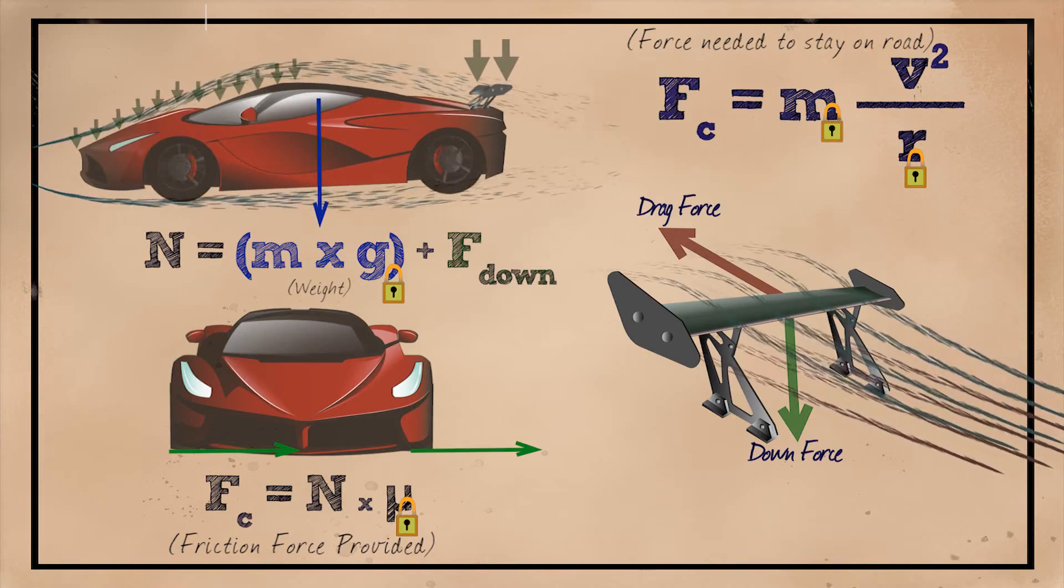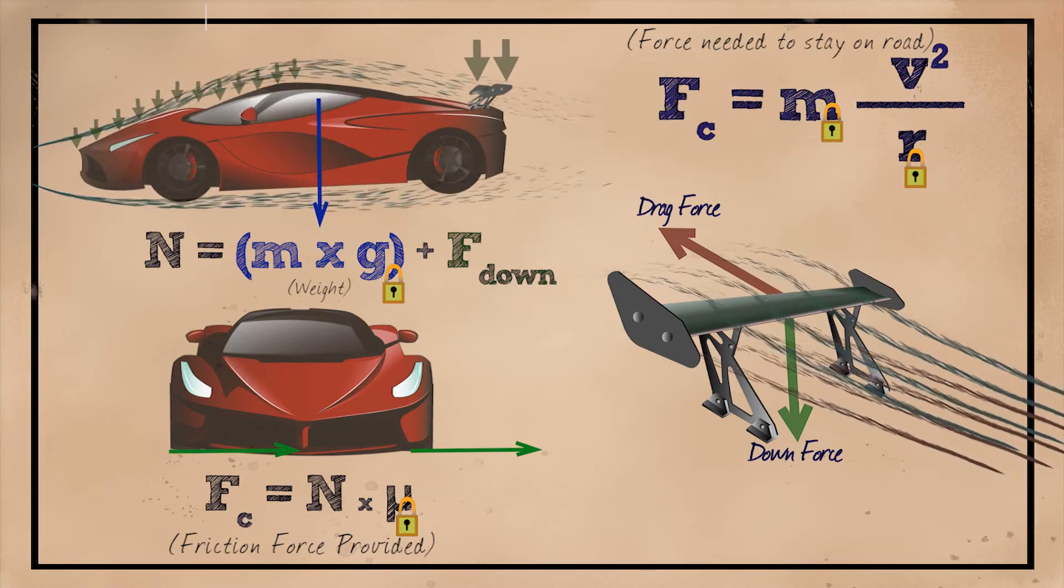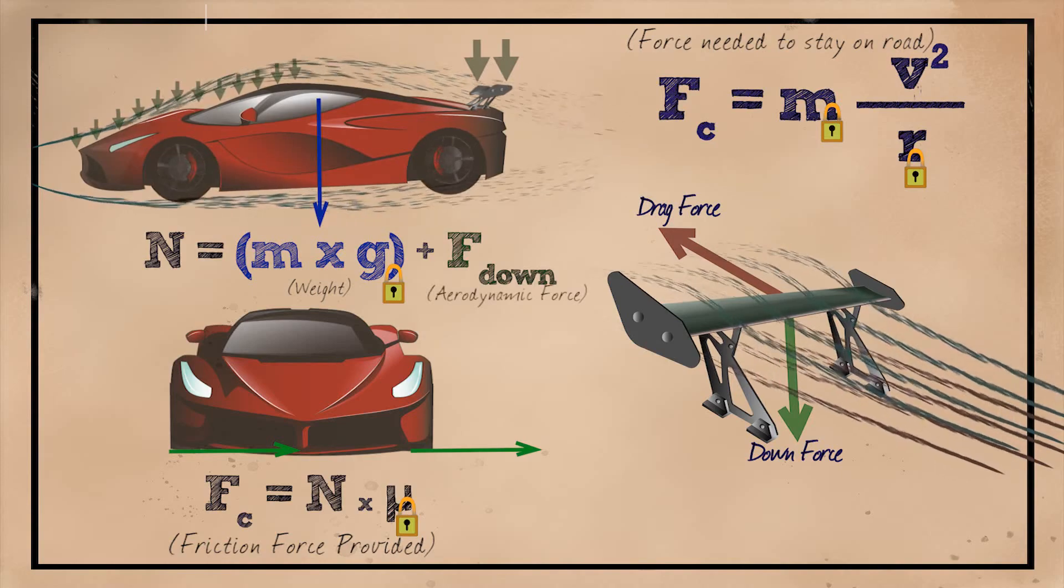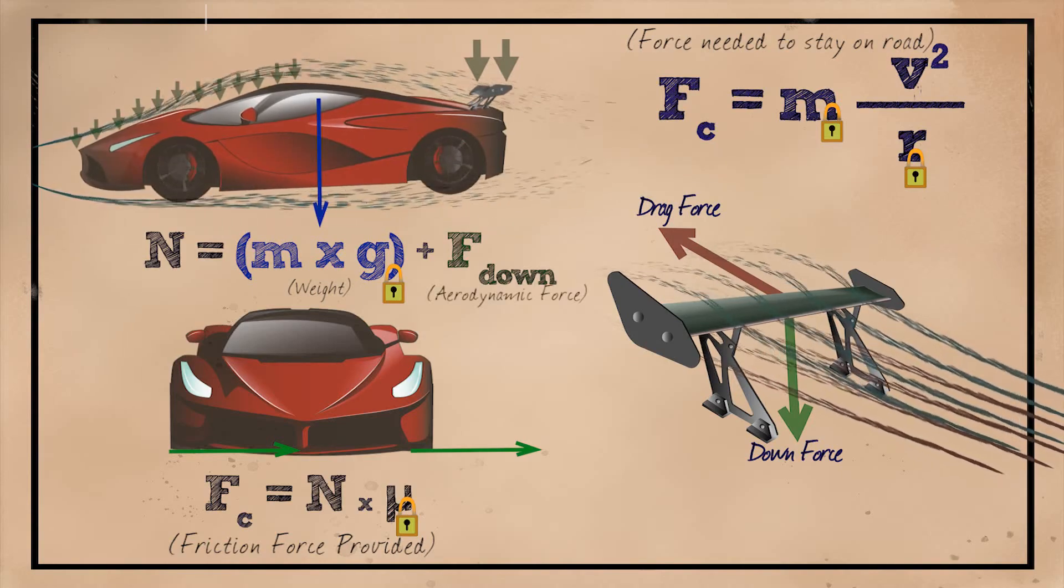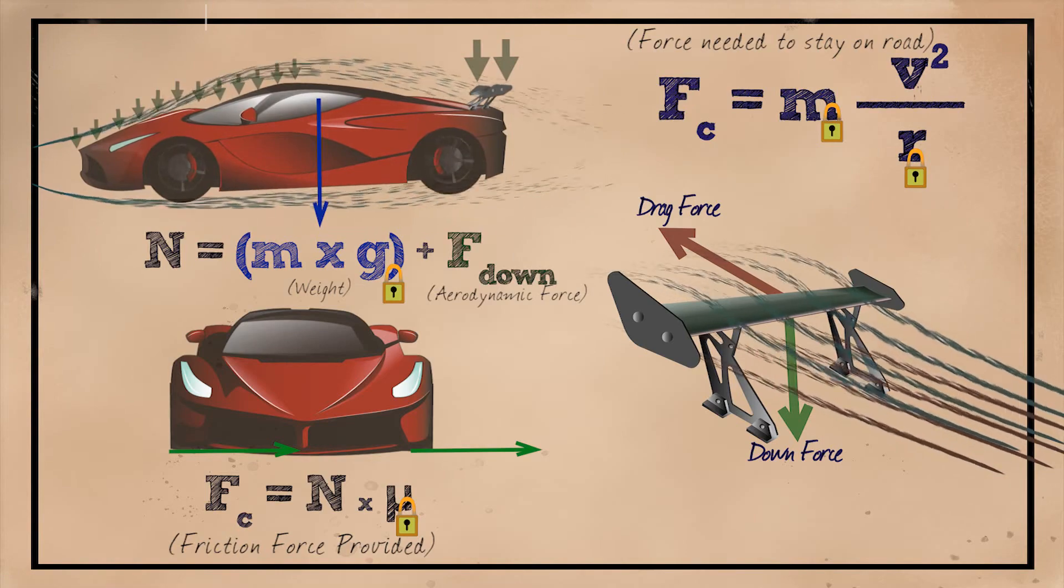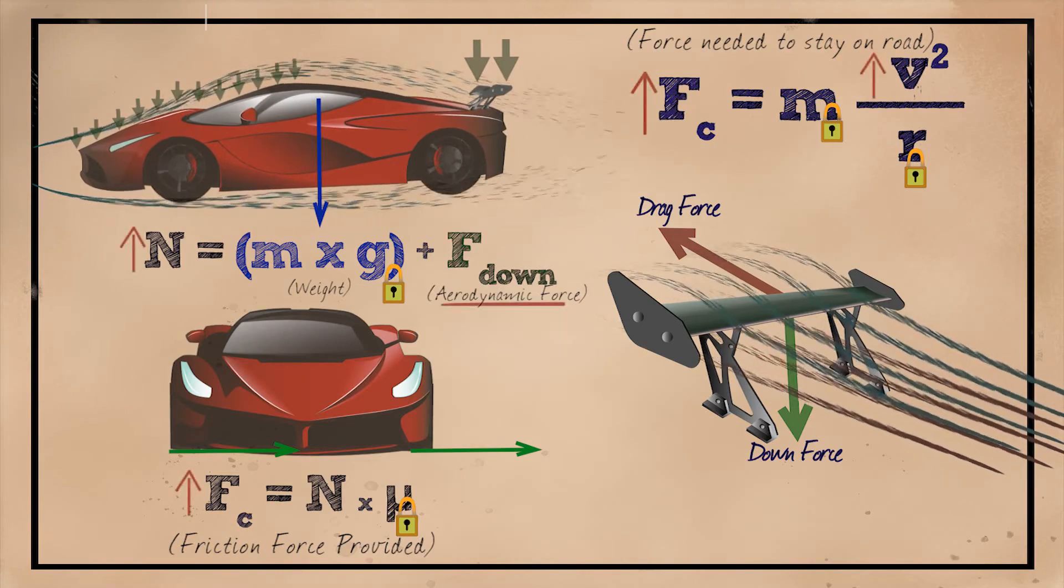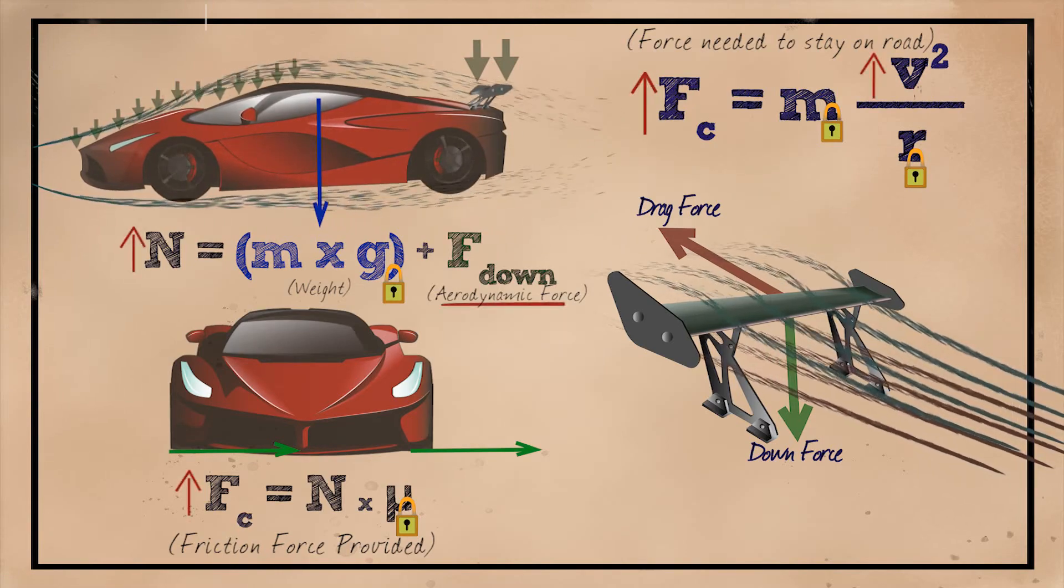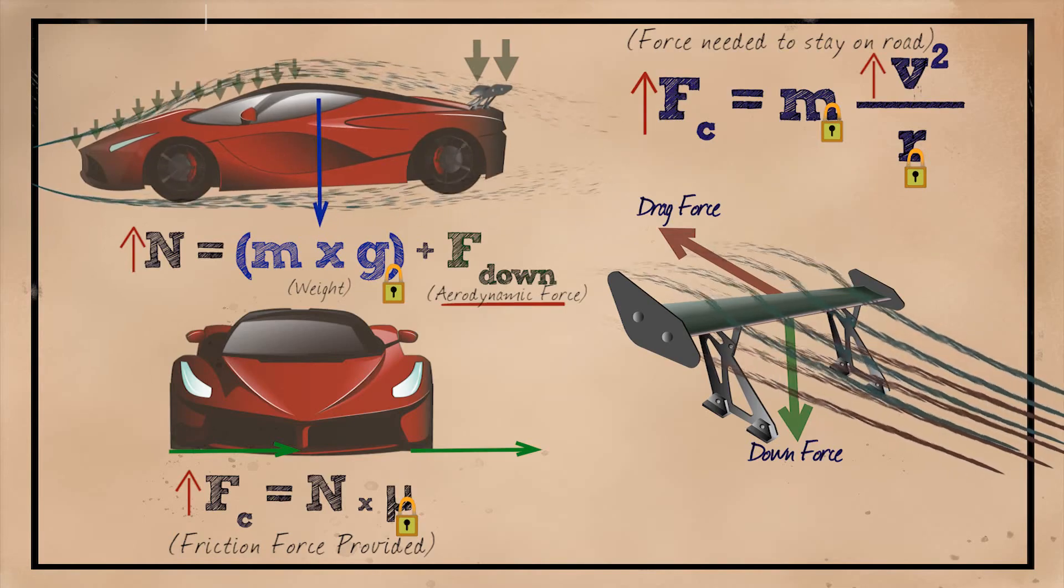But the downforce is where the real benefit lies. The tire's friction is proportional to the normal force. Adding aerodynamic downforce to the weight component increases the adhesion to the road. The larger normal force avoids wheel slipping or sliding off the road and allows for maximum possible acceleration.